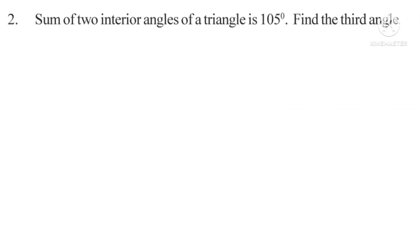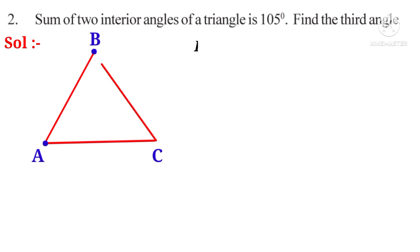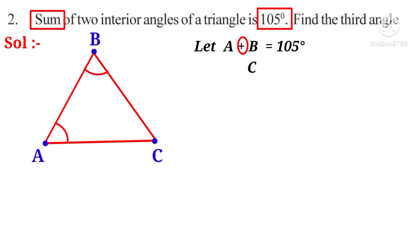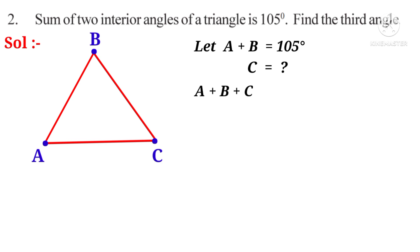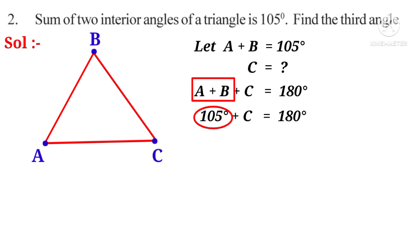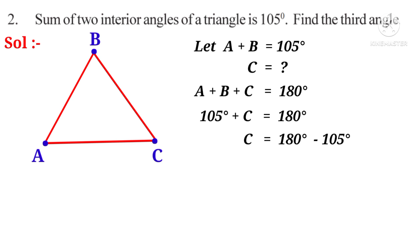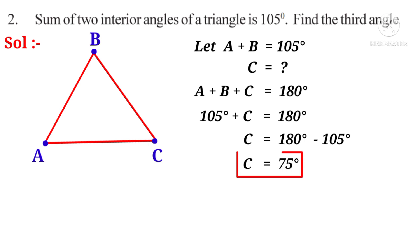Second problem: The sum of two interior angles of a triangle is 105 degrees. Find the third angle. Solution: Let angle A plus angle B = 105°. Since angle A + angle B + angle C = 180°, we get 105° + angle C = 180°. Therefore, angle C = 180° − 105° = 75°. The third angle C is equal to 75 degrees.